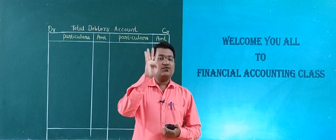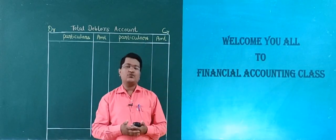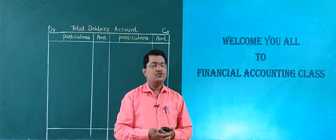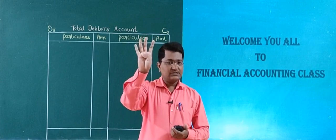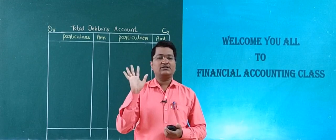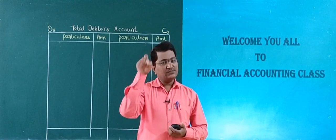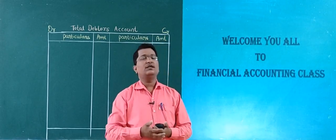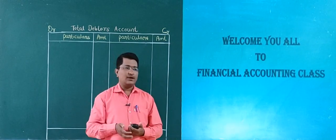We find there are 4 amounts: the first one is opening debtors, closing debtors, credit sale, and cash received from debtors. Out of these 4 amounts, one is missing in the question, and we need to find that missing amount.